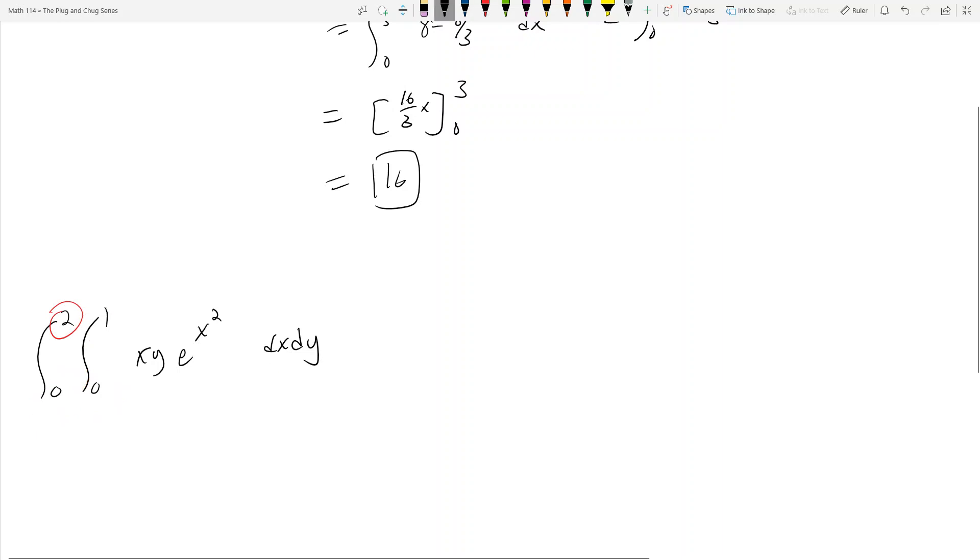But anyways, back to this problem. Ignore the switch, we'll talk about that later. So dx dy, I'm going to integrate this guy with respect to x first and it looks a little tough, right? Well it looks like I need to make some kind of change of variables. Yeah, I do. I need to make a u sub. So I need u equal x squared and then du is going to be 2x dx, right?